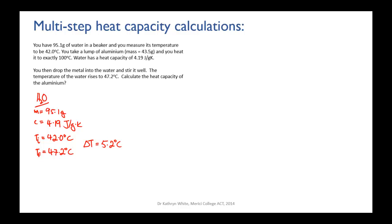Now for the aluminium: mass is 43.5 grams, initial temperature is 100 degrees Celsius — exactly 100, so we take that as three significant figures — and its final temperature is also 47.2 degrees Celsius.